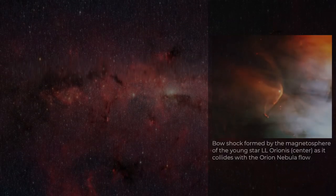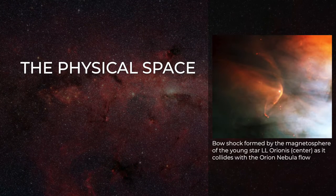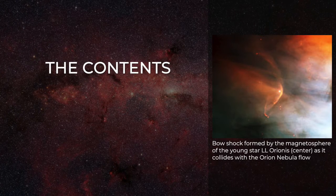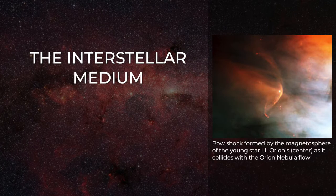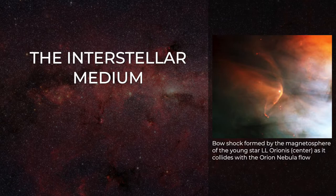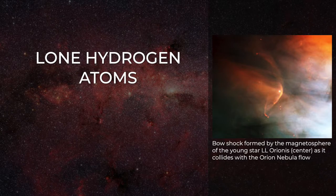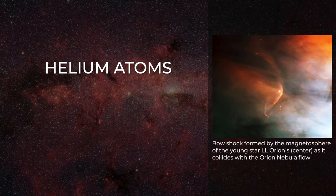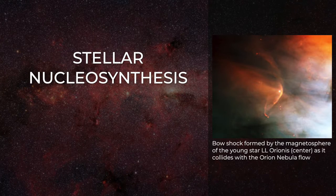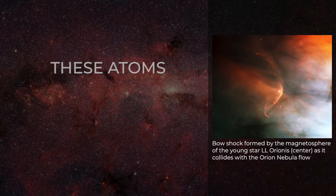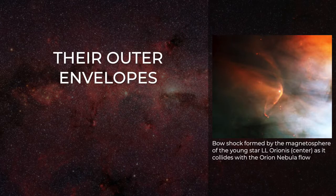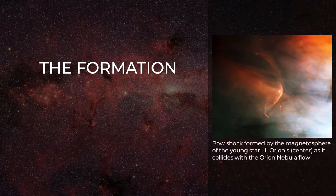Interstellar space is the physical space within a galaxy beyond the influence each star has upon the encompassed plasma. The contents of interstellar space are called the interstellar medium. Approximately 70% of the mass of the interstellar medium consists of lone hydrogen atoms, most of the remainder consists of helium atoms. This is enriched with trace amounts of heavier atoms formed through stellar nucleosynthesis. These atoms are ejected into the interstellar medium by stellar winds or when evolved stars begin to shed their outer envelopes such as during the formation of a planetary nebula.